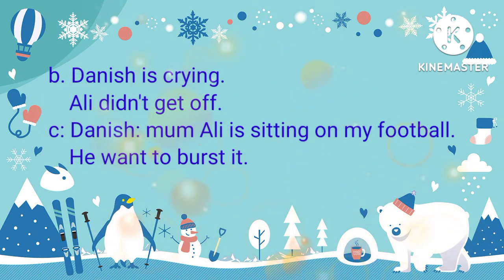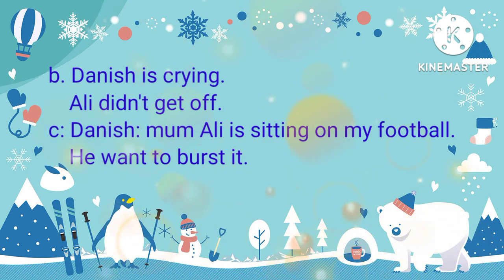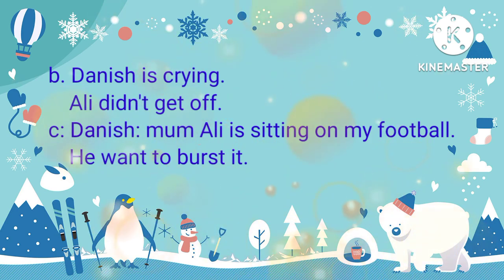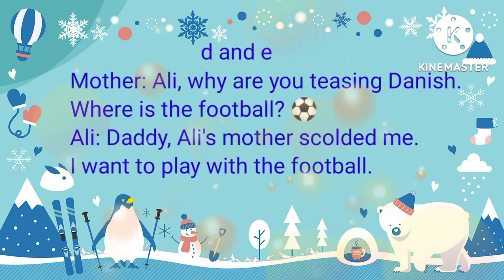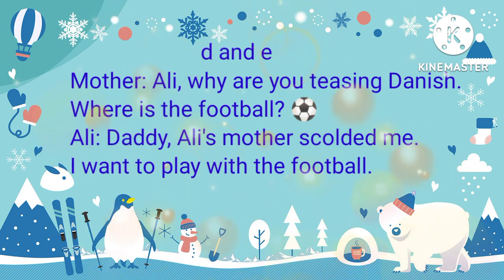We can say that Danish is crying and Ali didn't get off. In picture C, Danish says to his Mom: 'Mom, Ali is sitting on my football. He wants to burst it.' In picture D, we can see Mother saying: 'Ali, why are you teasing Danish? Where is the football?'